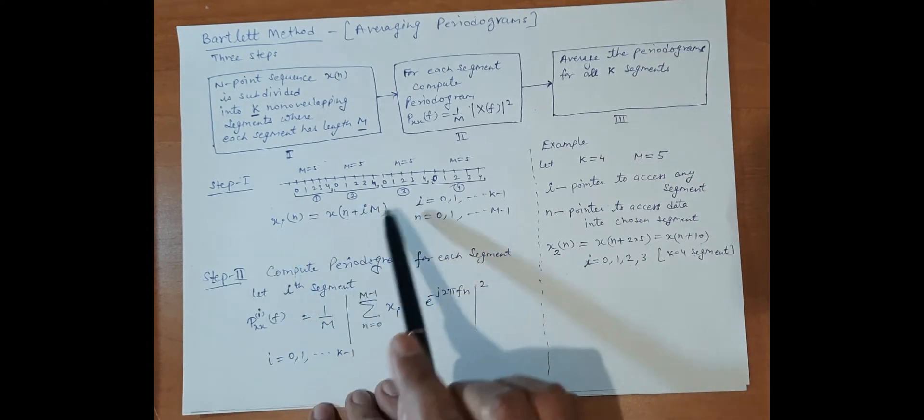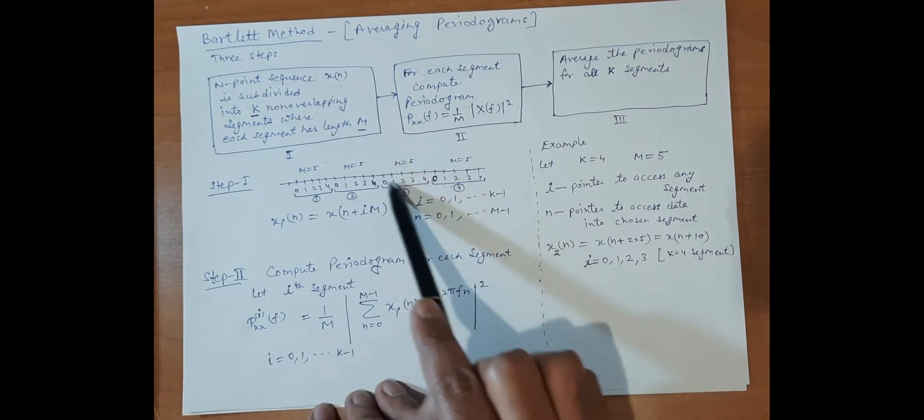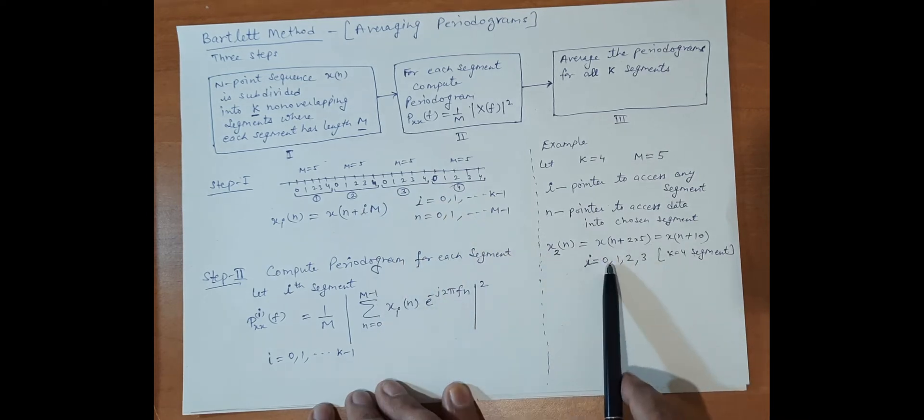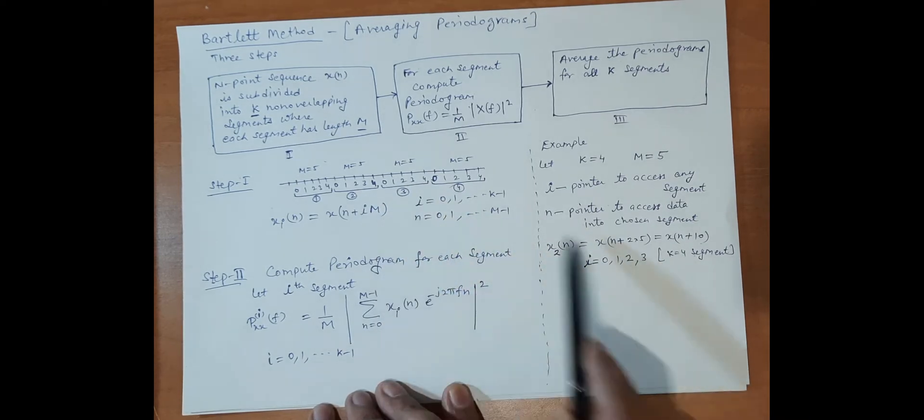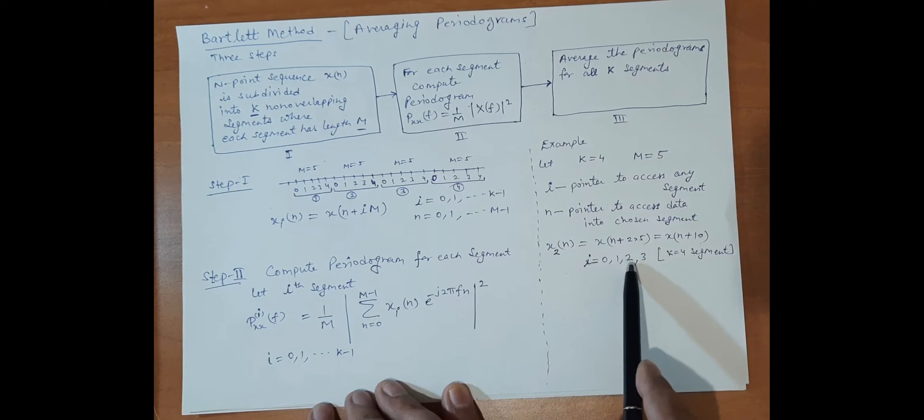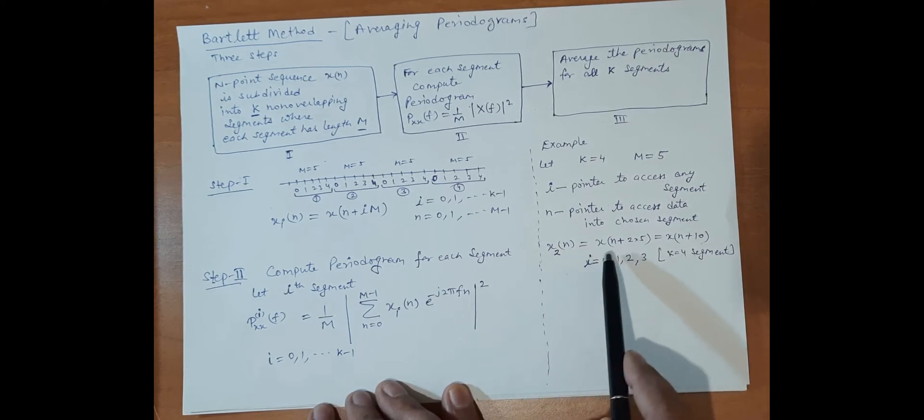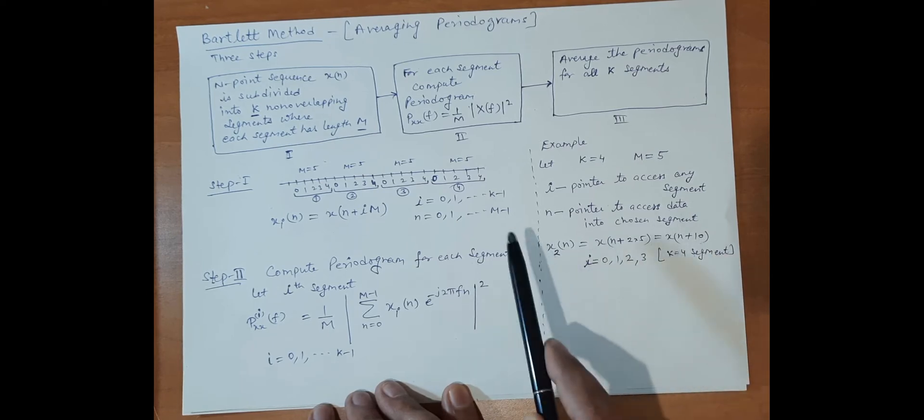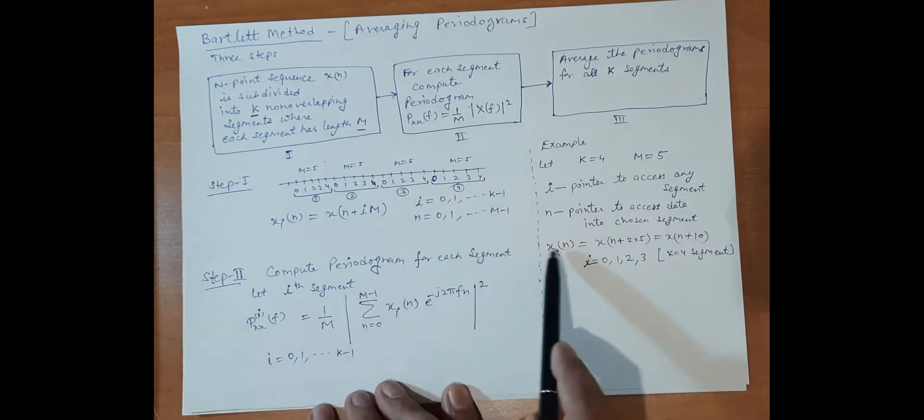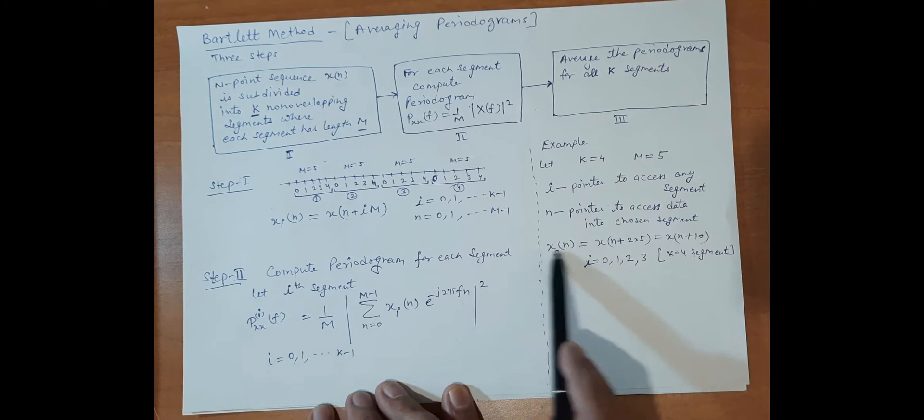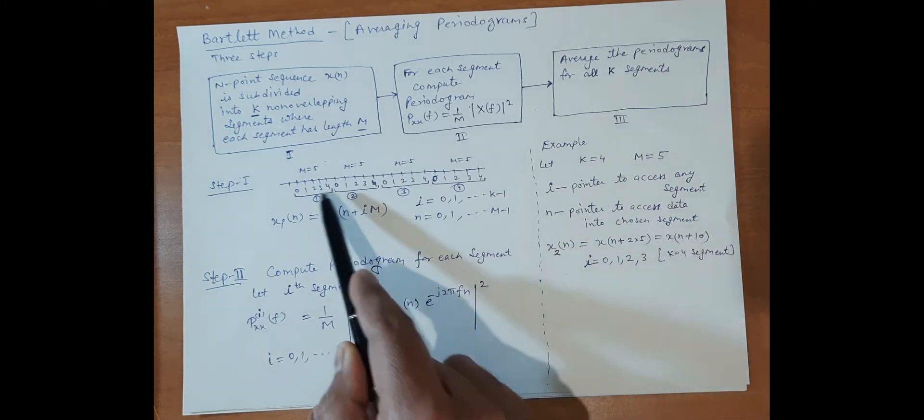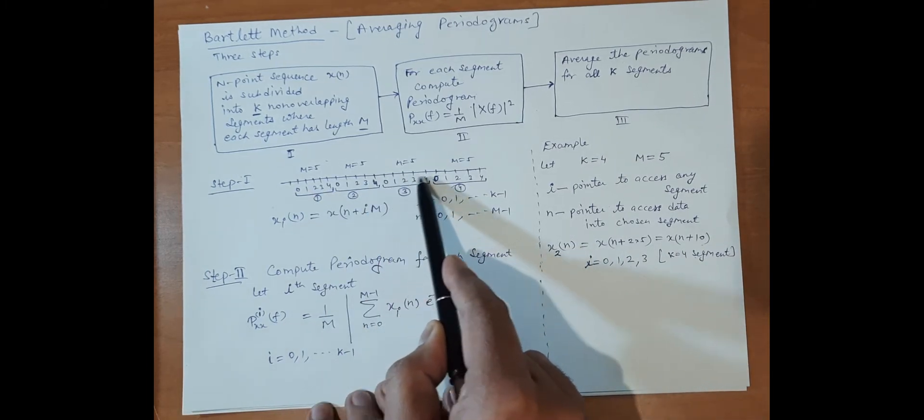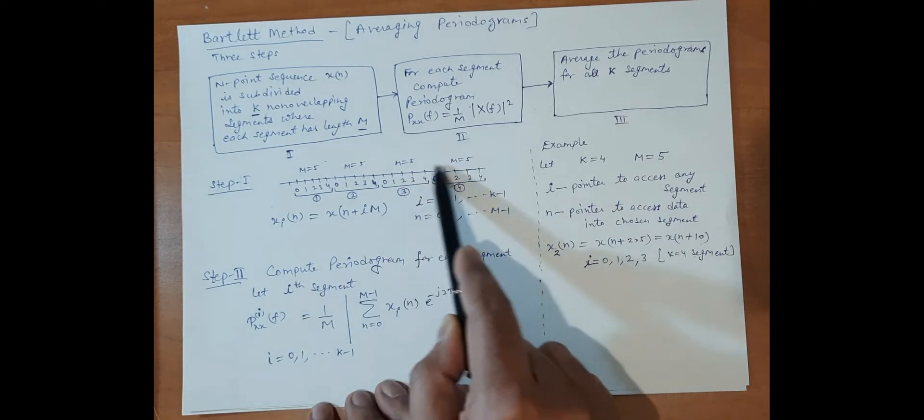Now we want to access the third segment. We put i equal to 2, because the third segment is number 2 (0, 1, 2). With m equal to 5, we get x(n+10). So we can access it by x_2(n), which is x(n+10). After 10 samples, the next n values are x_2(n).